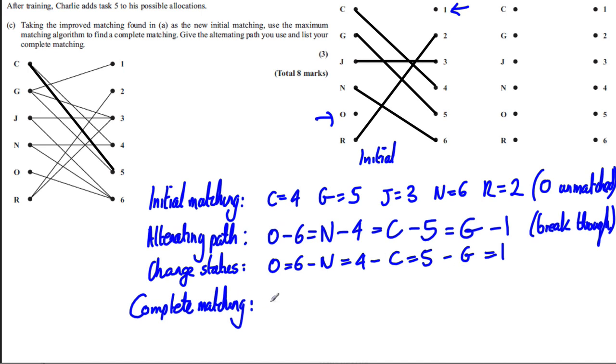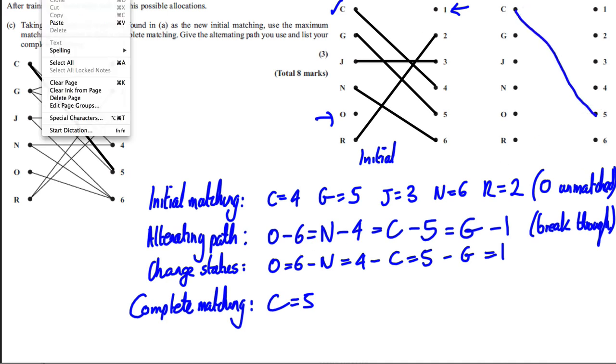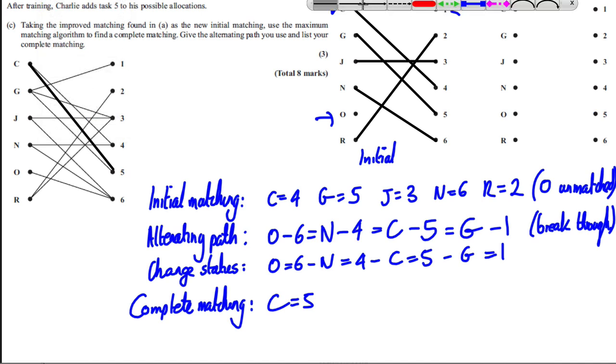So C is now with 5. I could draw that in. You should use a straight line. So C is with 5. And G is with 1. And J didn't change. It's with 3. And N is with 4. And O is with 6. And R did not change. It's with 2.